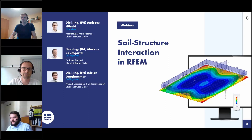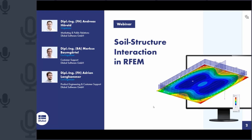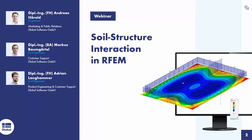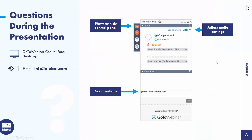Thank you for your introductions. I think we can switch off the webcams so that attendees can see the whole screen. On the right side of your screen you can open a control panel where you can ask questions via chat. Adrian and Markus will answer you. If you don't get an answer during the webinar because there are too many, you will get an email after the webinar. Alternatively, you can watch the entire webinar and then email your questions to info at global.com.